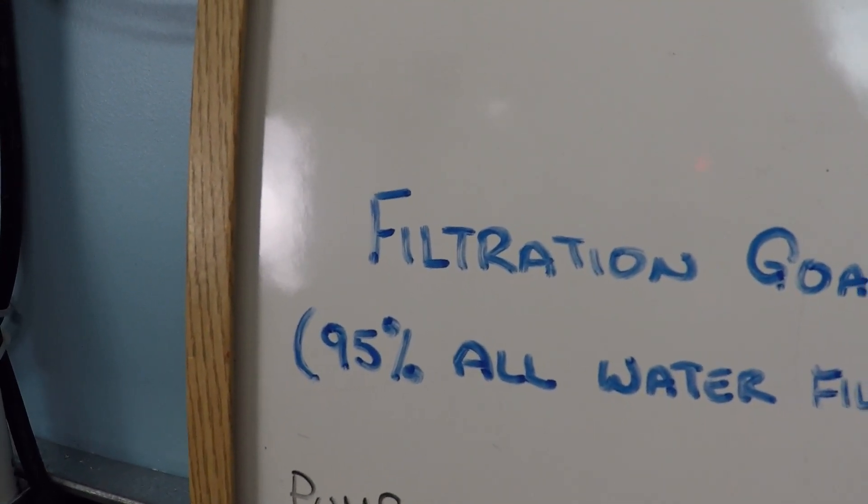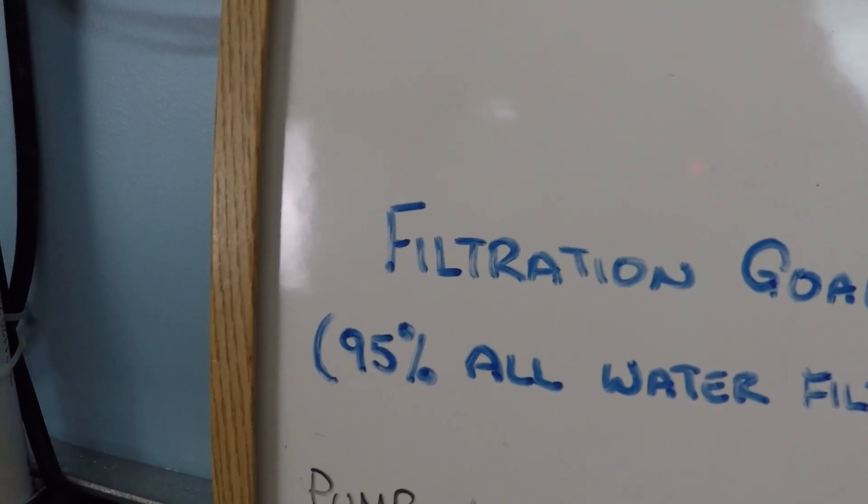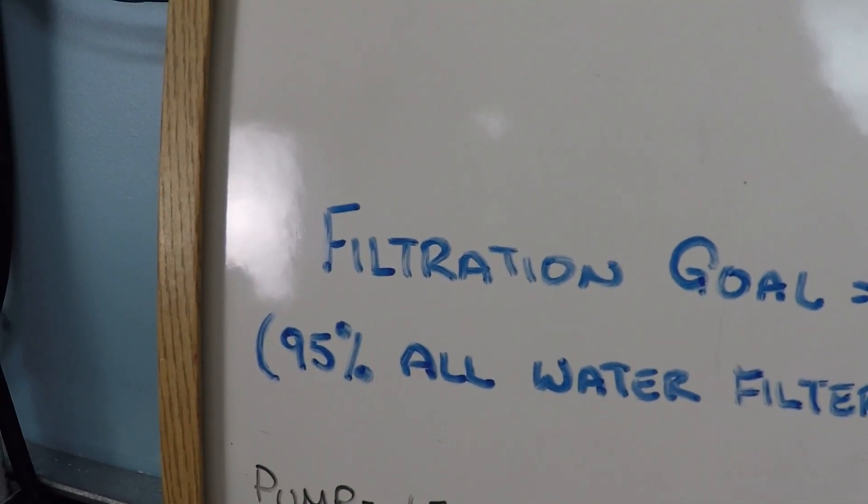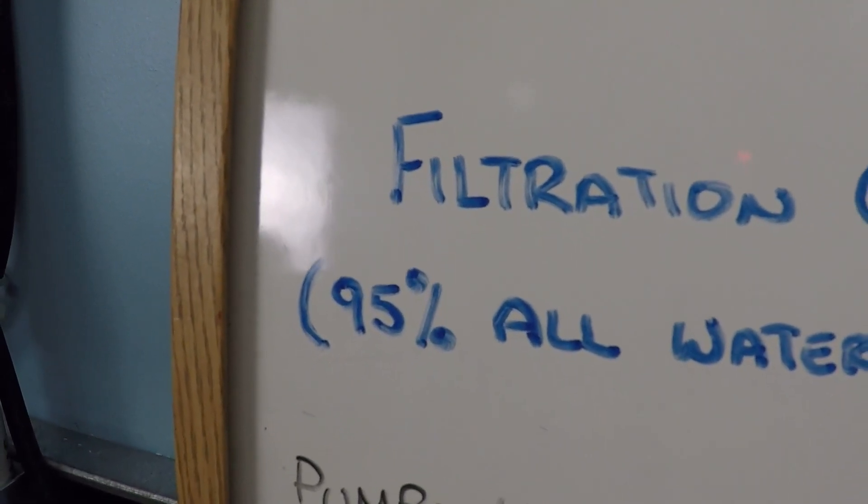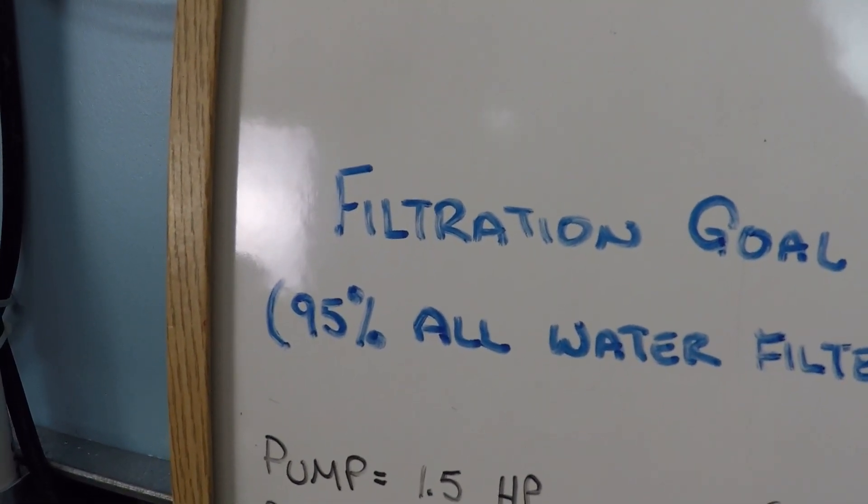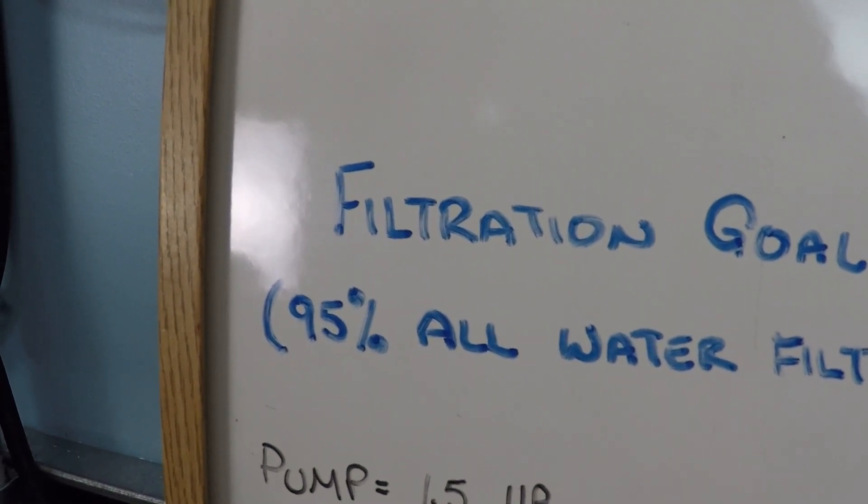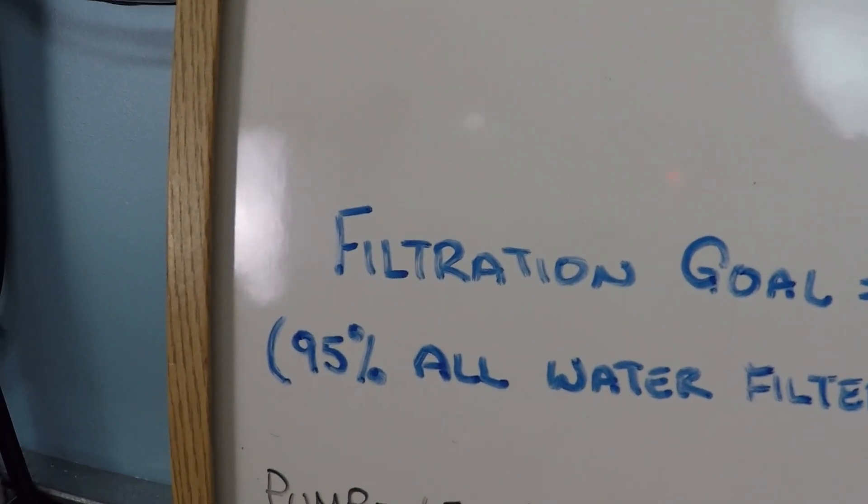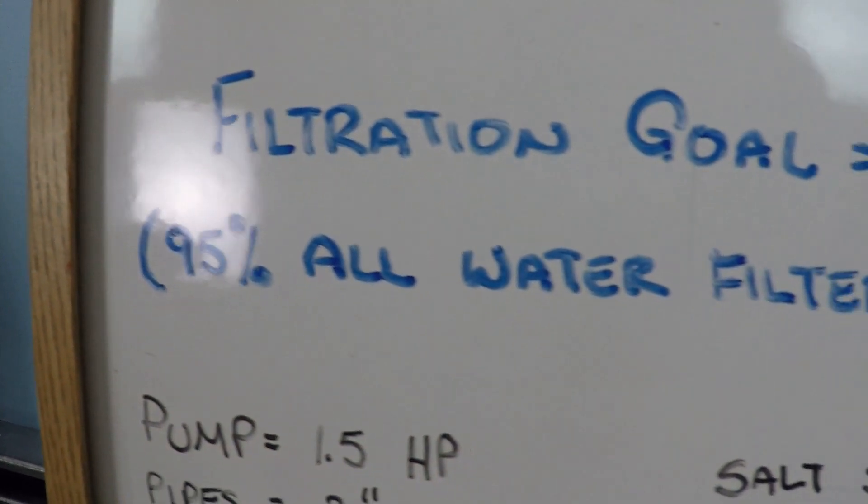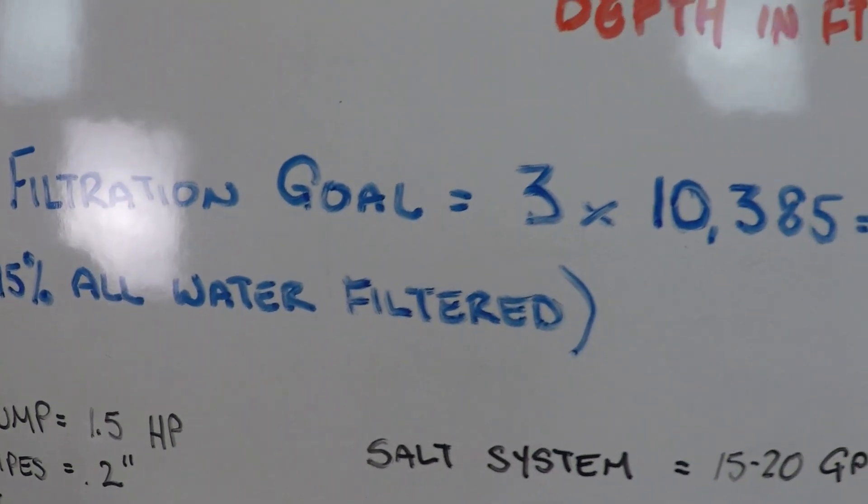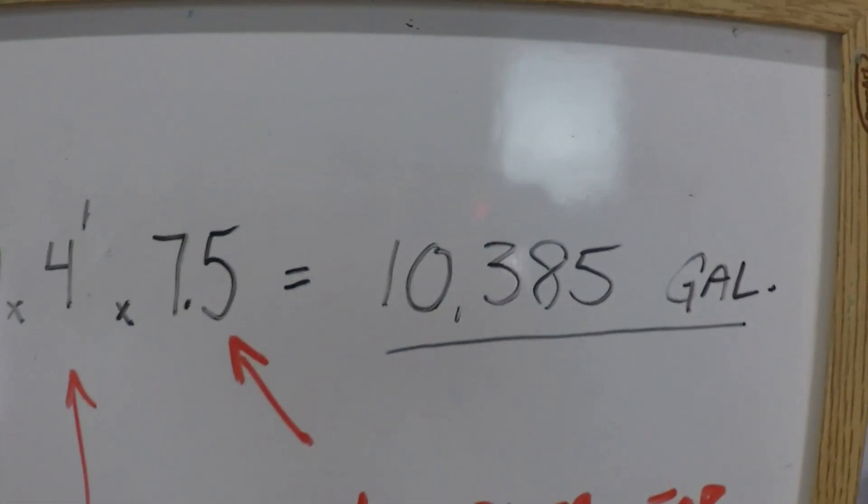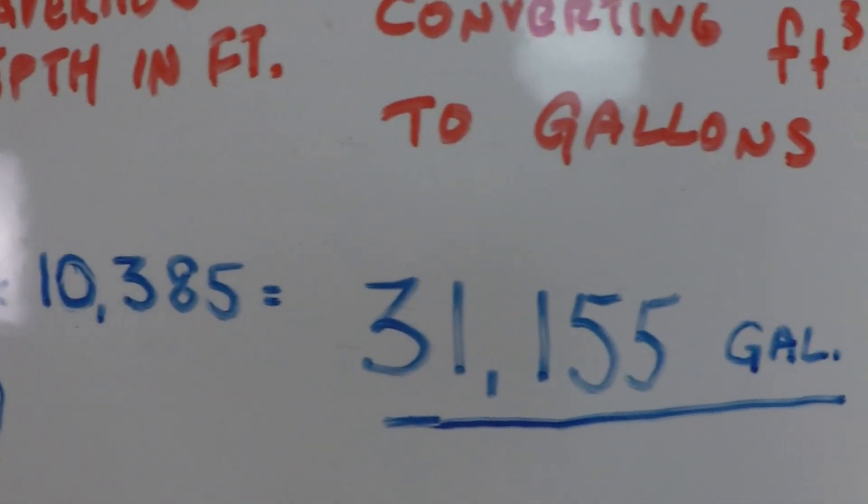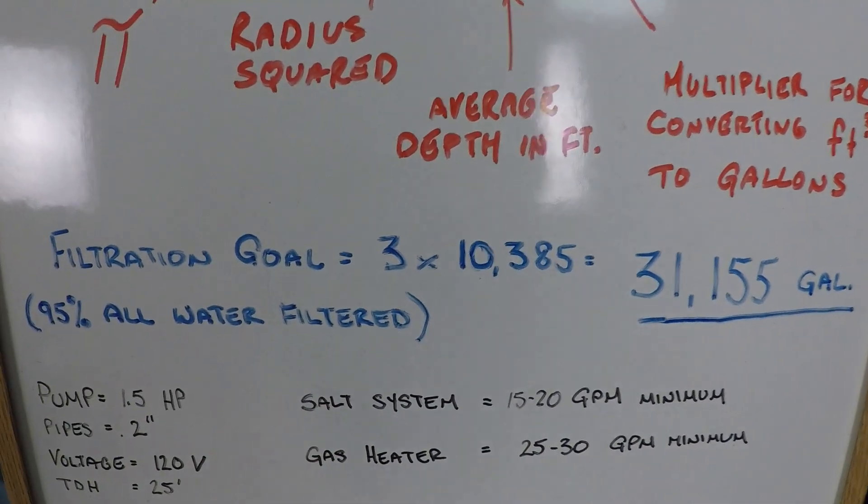Everything that you fail to filter from the water will now need to be dealt with by the chemicals and the chlorine in the water. That means if you filter less, you use more chlorine. Most pool owners want to use less chlorine, less chemicals overall. The way you accomplish that is more filtration of the water, to the extent that 95% of all the water in your swimming pool gets filtered every single day. So you want to take your total volume and times it by 3 as the minimum amount. That's our filtration goal for this 21-foot round swimming pool.